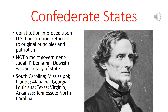There's been a lot of Yankee propaganda about the true nature of the Confederate government, so I'm just going to set the record straight. The Confederate Constitution is basically a lot like the U.S. Constitution, except it has fewer problems and returns to original principles, emphasizing the role of patriotism. This was not a racist government — the proof being that Judah P. Benjamin, a Jew, was Secretary of State, the third highest position in the government. The Confederacy consisted of the following states: South Carolina, Mississippi, Florida, Alabama, Georgia, Louisiana, Texas, Virginia, Arkansas, Tennessee, and North Carolina.